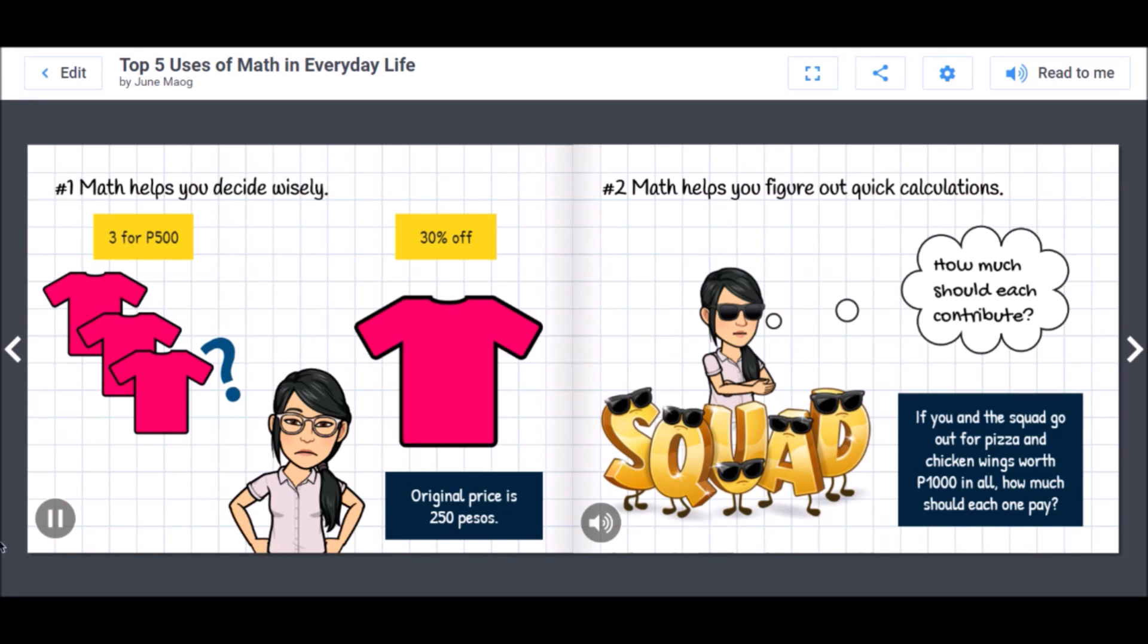Number one: Math helps you decide wisely. Say you want to buy a shirt that's worth 250 pesos originally. To your delight, this particular shirt is on sale at 30% off with an additional promo of getting three for 500 pesos. So what do you do? First off, you figure out how much the shirt will be at 30% off.